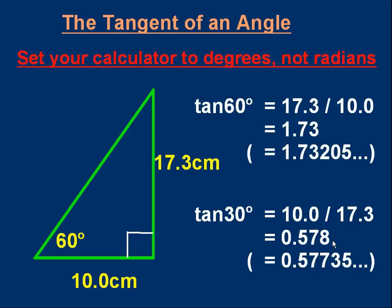And for 30 degrees, it's the top angle. The opposite will be 10, the adjacent 17.3. So tan 30 is 10 over 17.3. It's 0.578. And if you do it on your calculator, it will be 0.57735. There's a small rounding error difference here, isn't there? That's because the distances have only been measured to one decimal place. If I'd have made this 17.32, I'd have got better agreement.